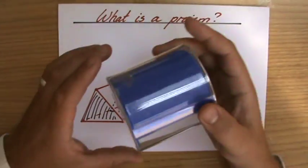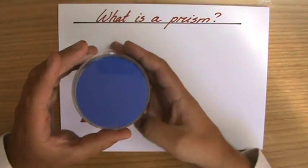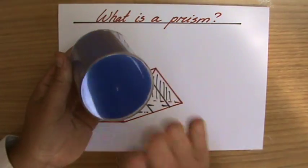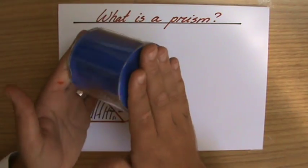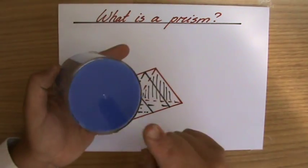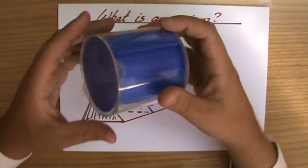Finally, I have here a cylinder. Now, a cylinder also has two end sides which are the same. They're circles. And if I would cut it through anywhere, I'd get the same circle.